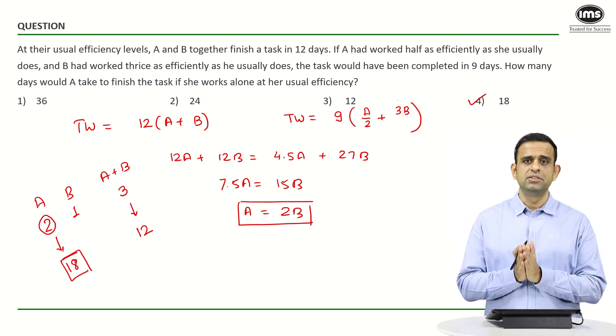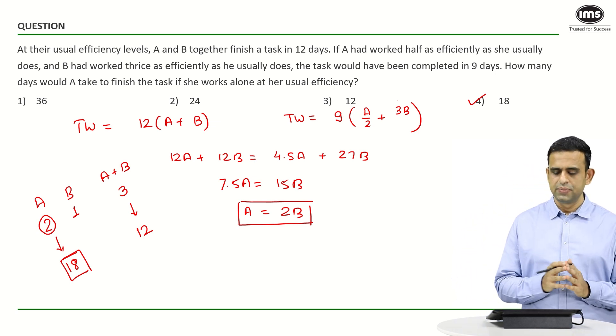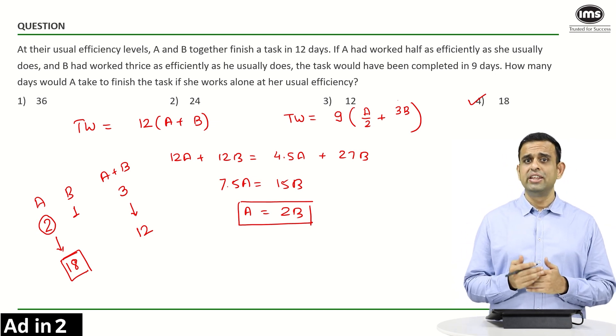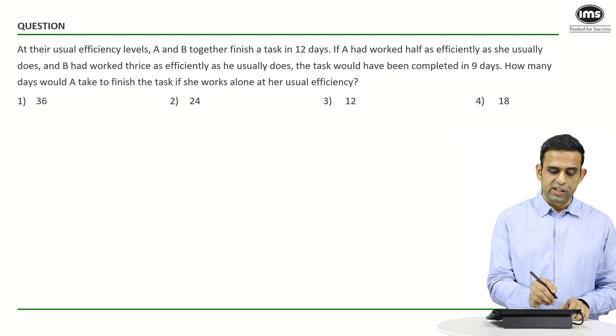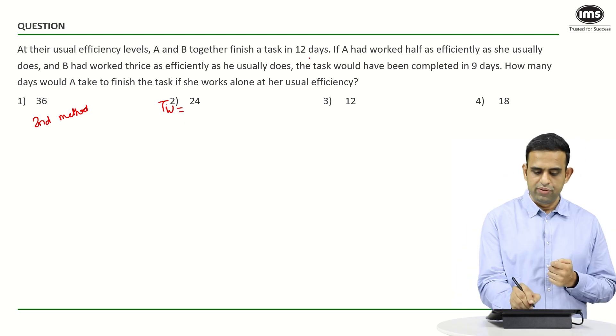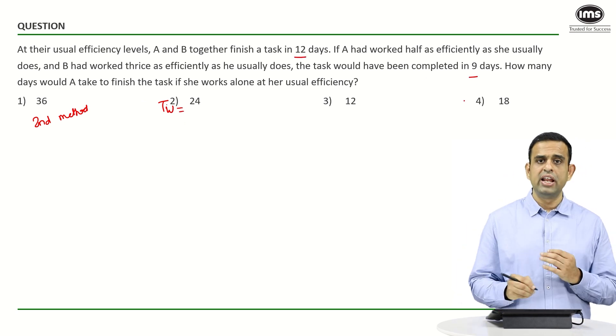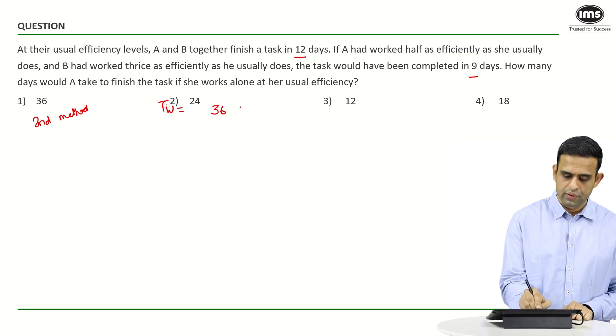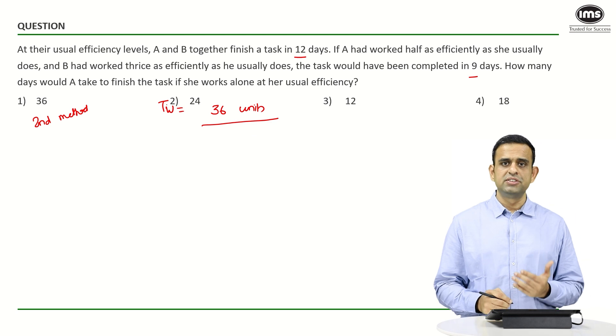Let's see another approach. Most of you are familiar with taking the LCM as total. For total work, the LCM of 12 and 9 comes out to be 36.